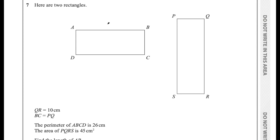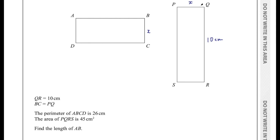Question 7 says here are two rectangles. QR equals 10 centimetres and BC equals PQ — I'll call that X. The perimeter of ABCD is 26 centimetres and the area of PQRS is 45 centimetres squared. Find the length of AB. So we're looking for AB, which I'll call Y, and also the unknown BC which I need to find as well.